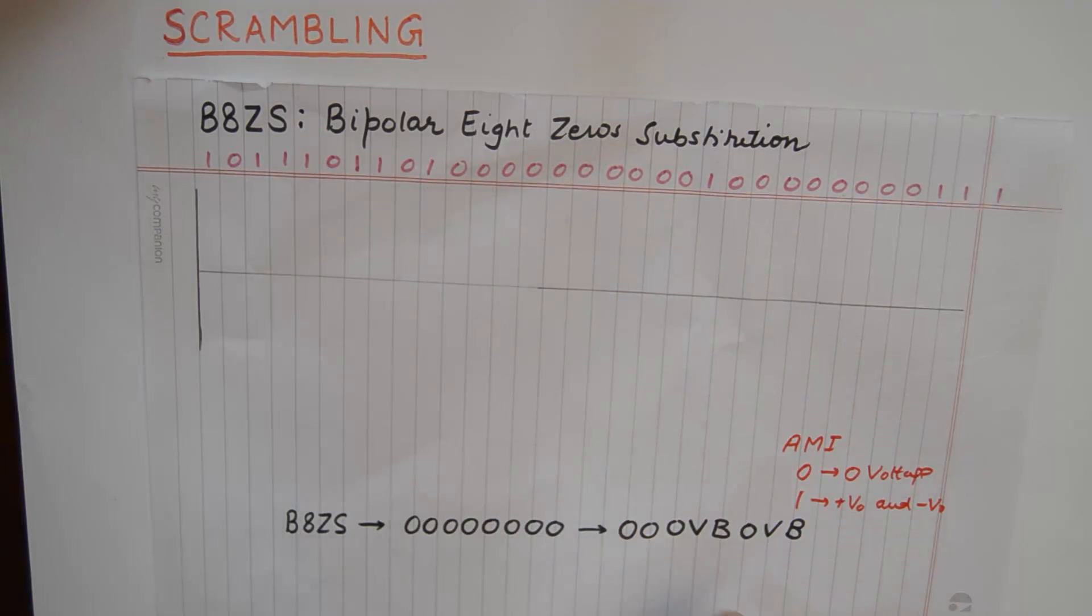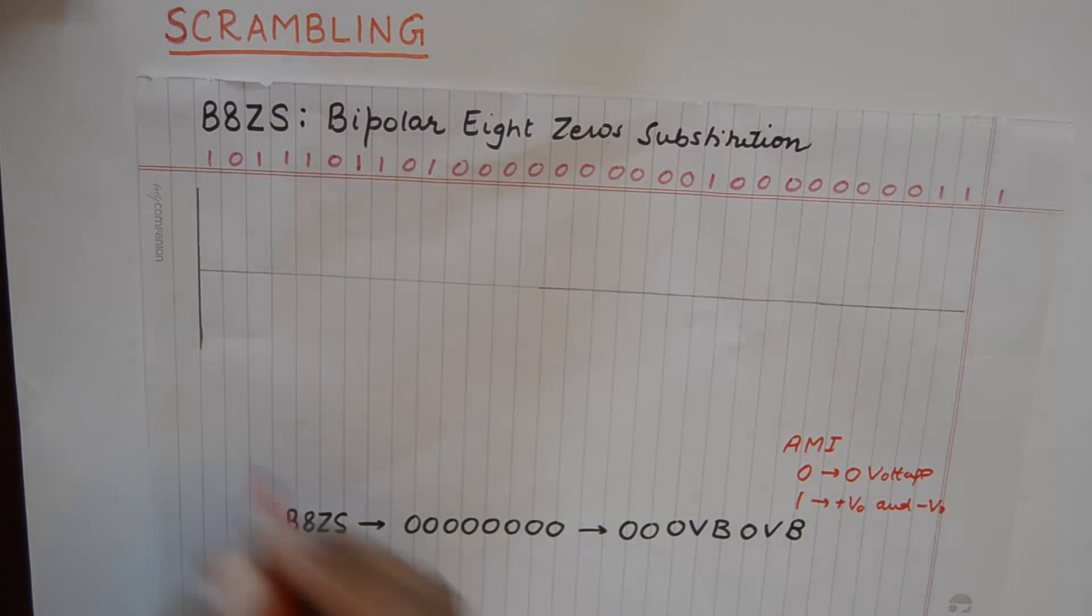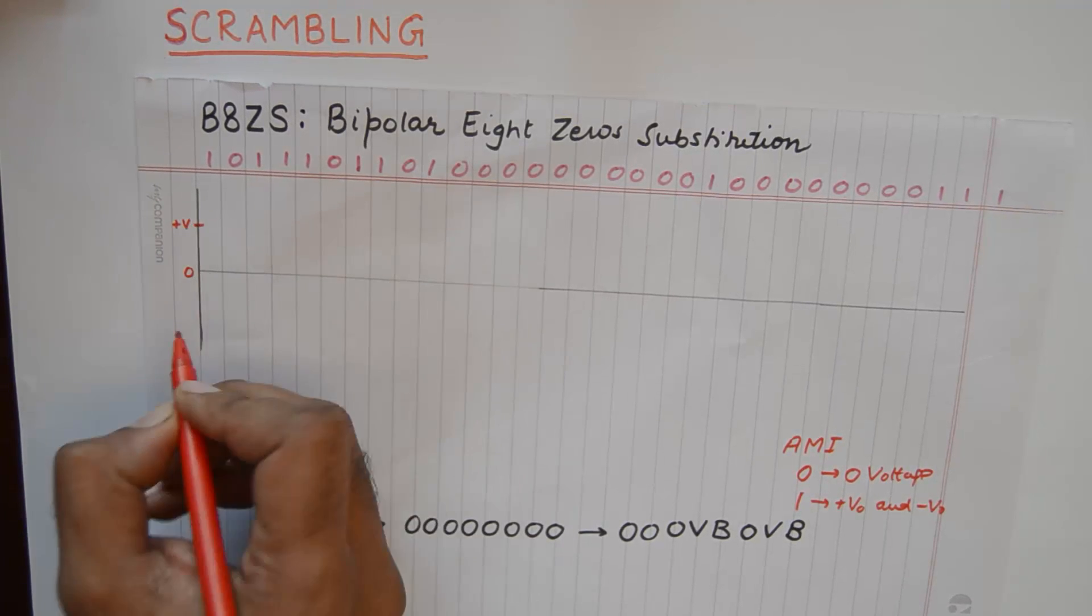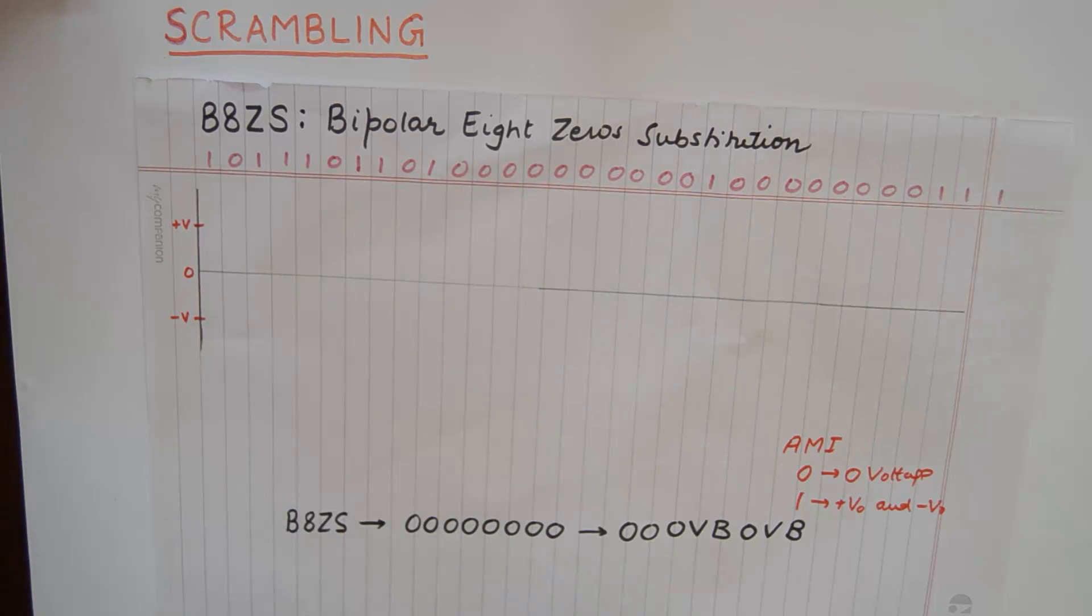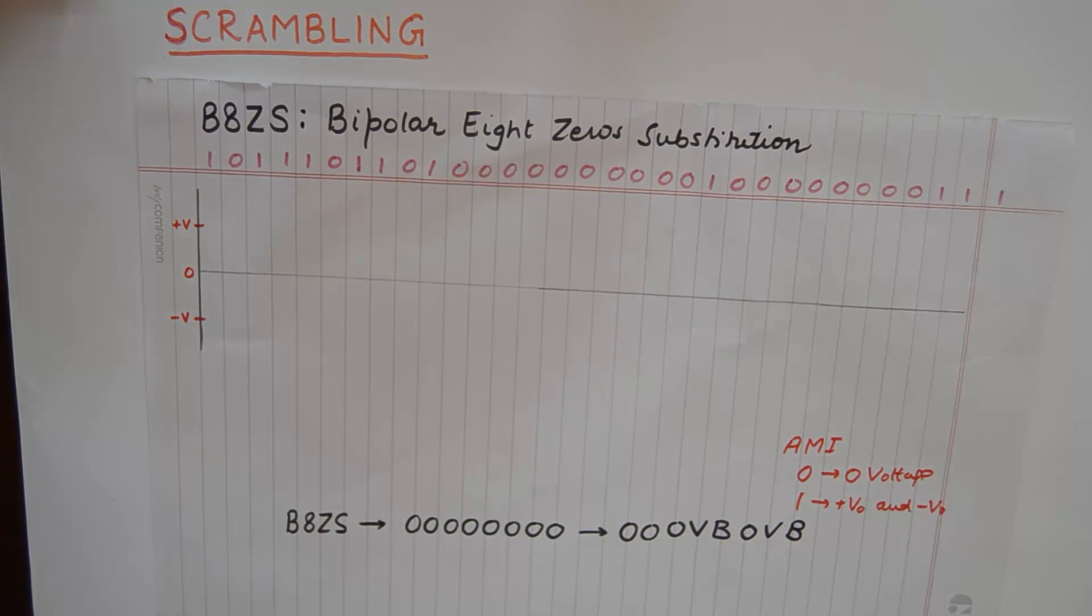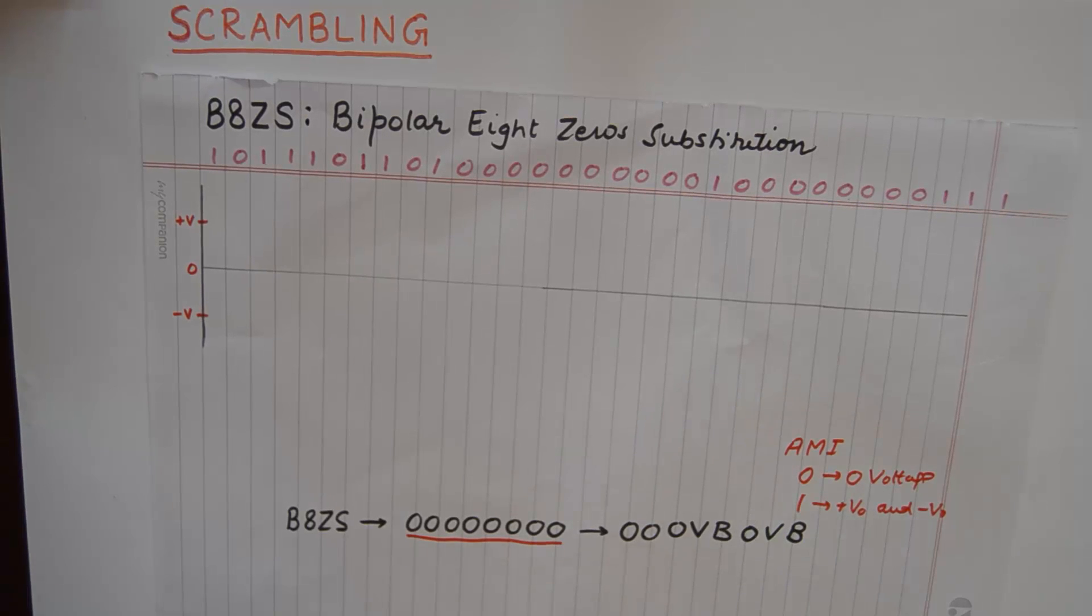To eliminate that we use this technique. Let us say we have plus V and minus V voltage here. If we were to encode this entire code using AMI we could have used this technique, but if we see eight zeros happening in succession then we need to replace it with 000VB0VB.